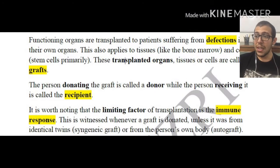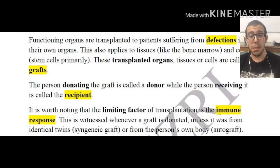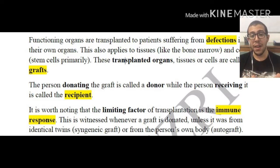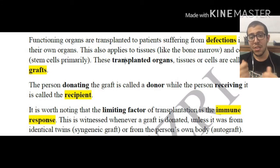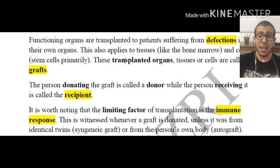Functioning organs are transplanted to patients suffering from defects in their organs. If a person's organs are doing completely fine, there's no reason to get a transplantation. However, sometimes we would need this, and there are implications of getting a graft — which we're going to define soon. This also applies to tissues like bone marrow and cells, primarily stem cells.